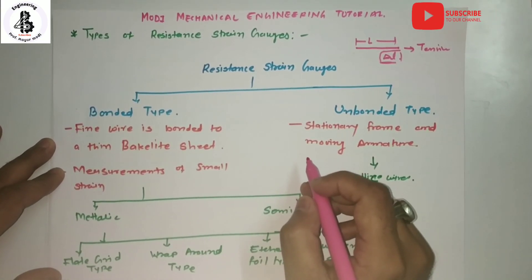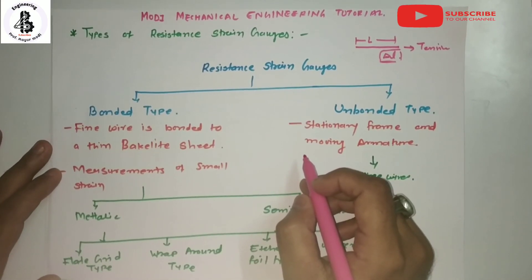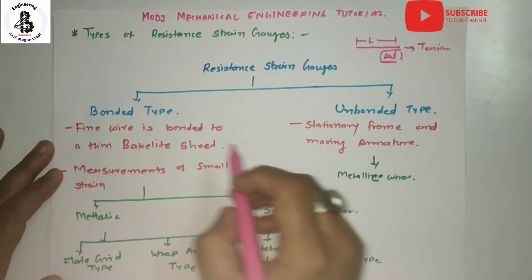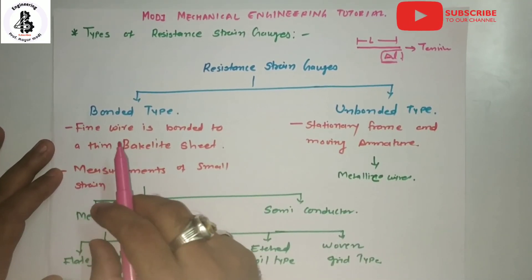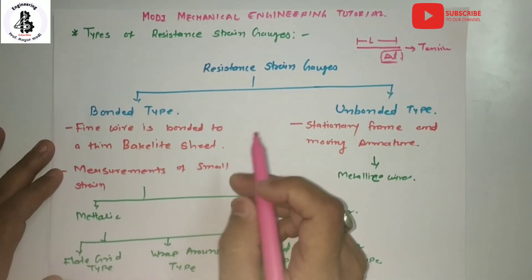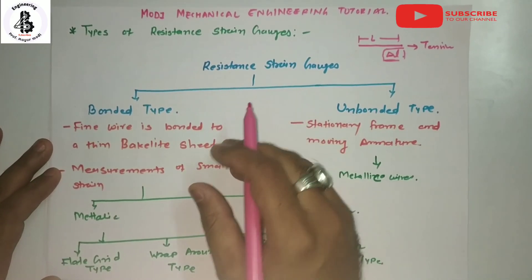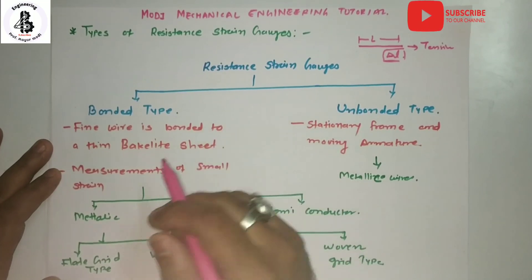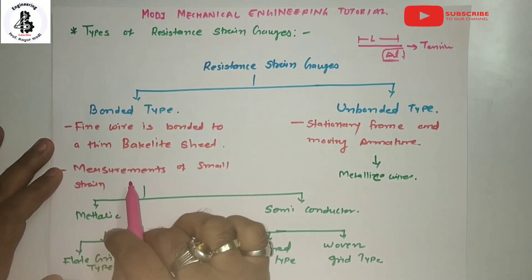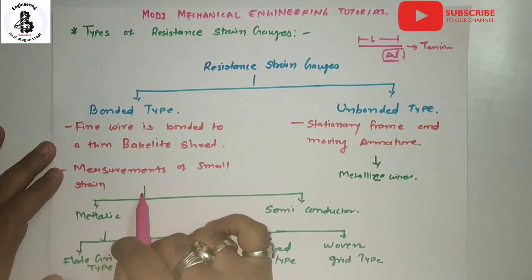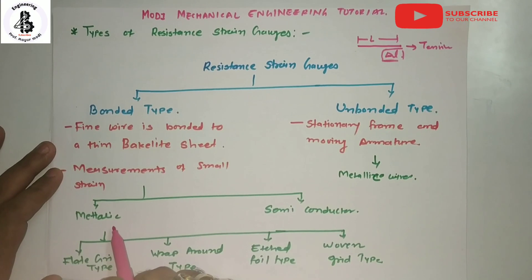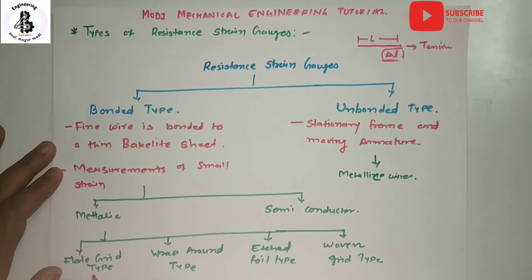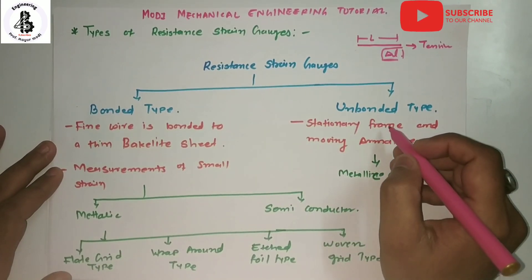The resistance strain gauge has two types: bonded type and unbonded type. In the bonded type, a fine wire is bonded to thin Bakelite sheets. It is used to measure small strains generated in systems. The bonded type is further classified into metallic type and semiconductor type. The metallic type has wide applications and is divided into four categories: flat grid type, wrap around type, foil type, and woven grid type.